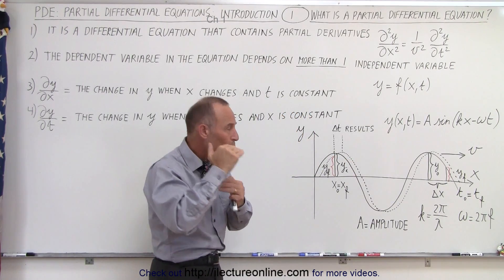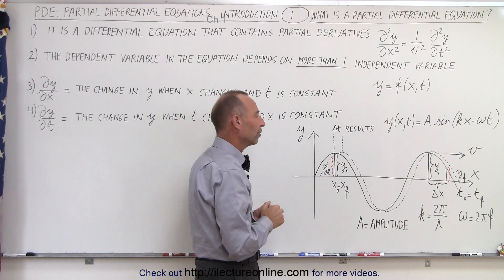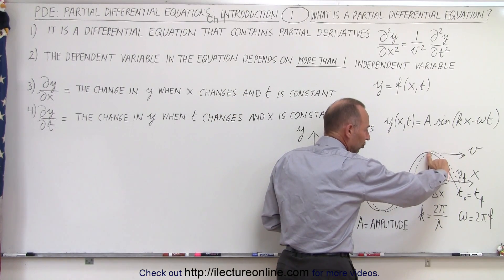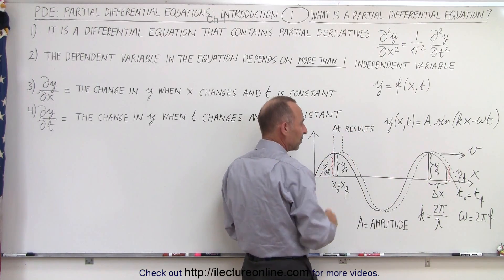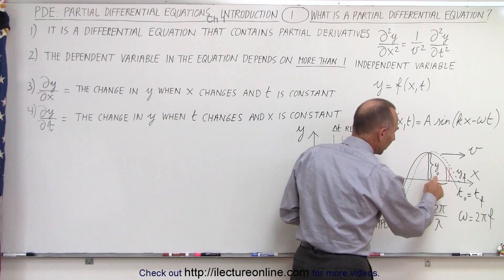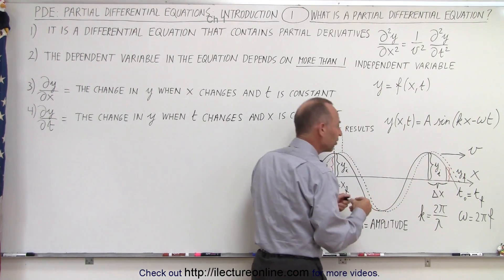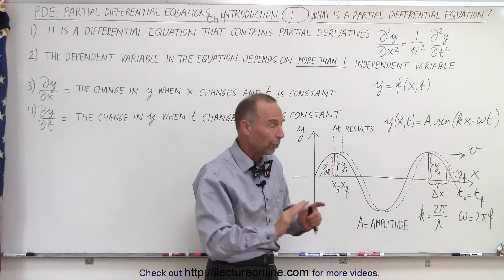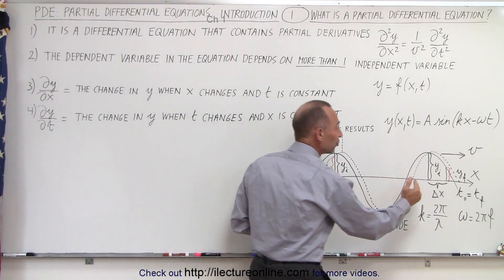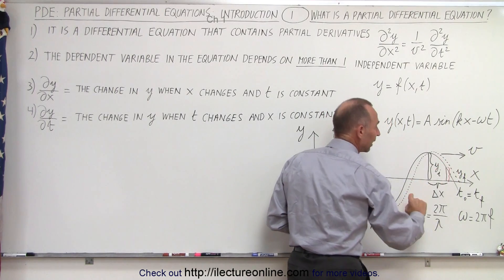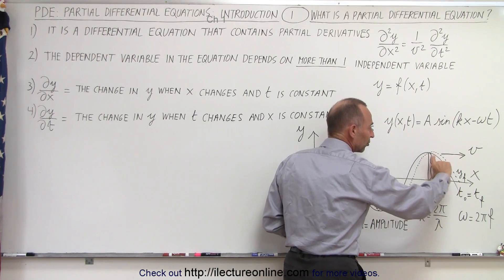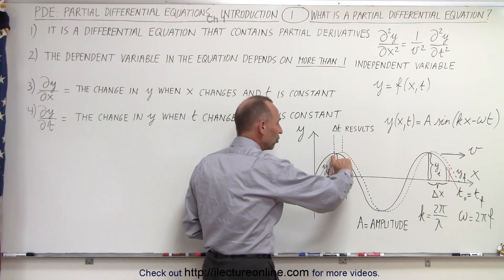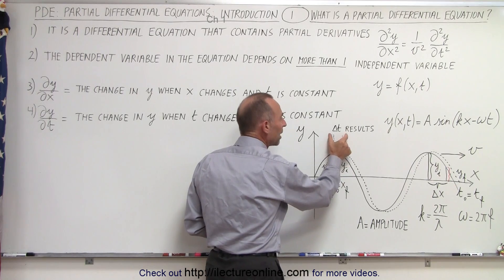We can also keep the time constant. We measure the height of the function at the crest, y sub i, at this particular location. Now we keep time constant — the wave stays put. We then move a small distance in x and measure the height of the function again. Notice that the height is now different, so there is a change in y with a small change in x while time is kept constant.